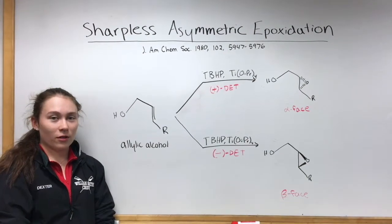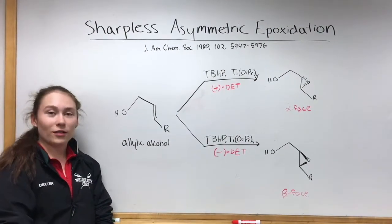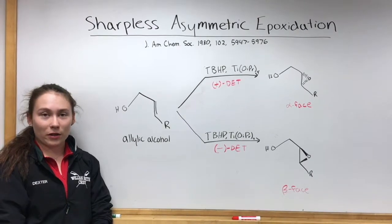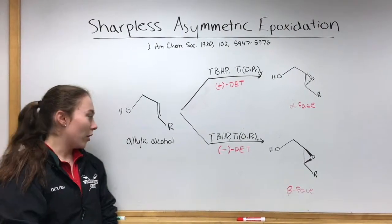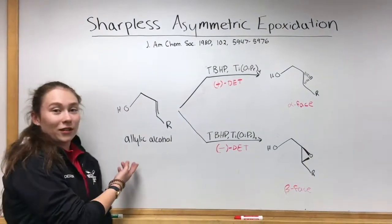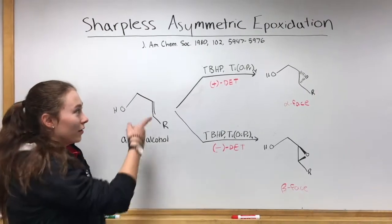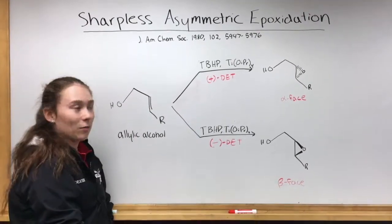The Sharpless Asymmetric Epoxidation was proposed in 1980 by Carl Barry Sharpless and involves a starting material of an allylic alcohol, TBHP, and a titanium compound.